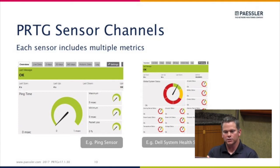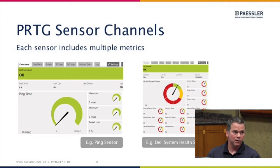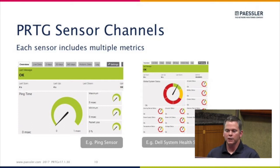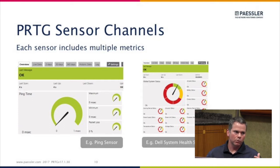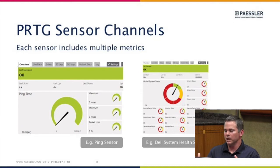In some cases it's just a handful of metrics, like ping: ping time, maximum, minimum, packet loss. Or in the case of a Dell PowerEdge or HP ProLiant health sensor, we're looking at 20 to 40 different metrics sometimes on the main board of a server.